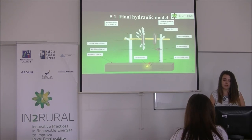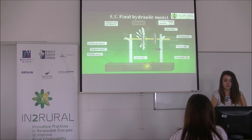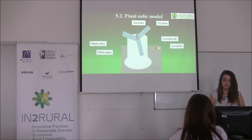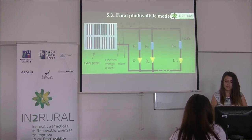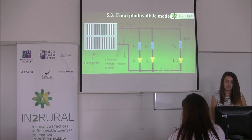We have arrived at the final models. The final hydraulic model uses two plastic roots, white styrofoam, a rubber band, plastic paste, LED diode, and so on. The final eolic model is made from a crocodile clip, LED diode, plastic paste, and plastic glass, with a CD piece and generator. The final photovoltaic model features a solar panel connected to 10 resistors — R is resistor — and 10 LED diodes — D is LED diode. Plus is direct current and minus is electric voltage.